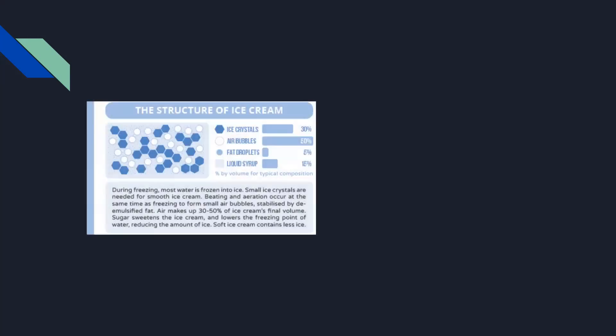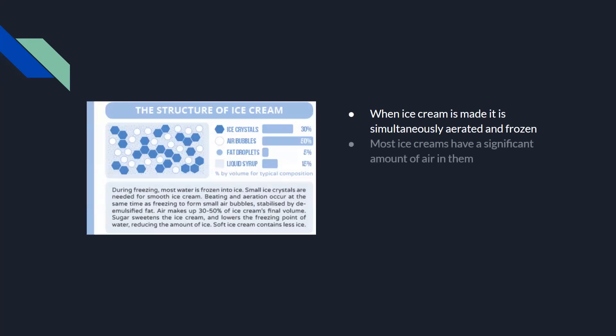Another key component of ice cream is its structure. When ice cream is made, it is simultaneously frozen while air is continuously added. Most ice creams have a significant amount of air in them, and the amount of air is actually one of the determining factors of what type of ice cream you have — it's one of the key differences between ice cream and gelato.